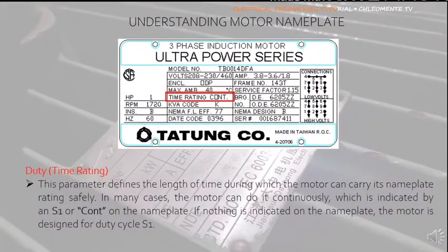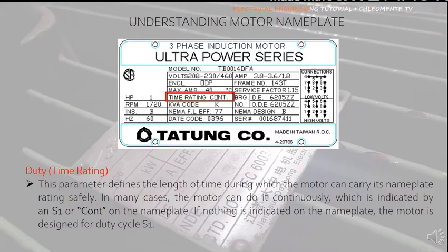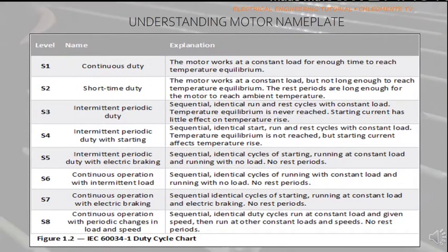Duty or Time Rating defines the length of time during which the motor can safely carry its nameplate rating. Time rating is normally leveled from S1 to S8. In this case, the time rating is CONT, or continuous rating, sometimes indicated as S1, meaning the motor can be operated continuously. If time rating is not indicated on the nameplate, the motor is designed for S1 or continuous rating. S1 or continuous duty means the motor works at a constant load through time until it reaches temperature equilibrium — the point at which no heat transfer occurs.